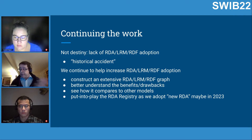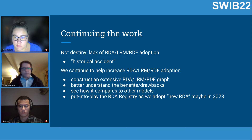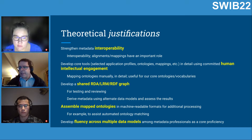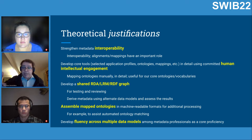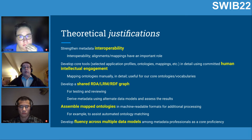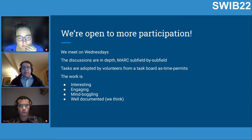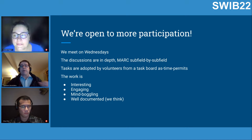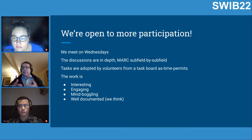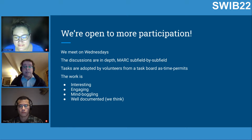Theory enters our work through our goal to increase RDA LRM RDF adoption. Main goals include creating an RDA graph to understand the drawbacks and benefits of RDA as linked data, comparing it to other models, and incorporating the RDA registry as we adopt the new RDA Toolkit in 2023. Theoretical justifications revolve around interoperability, human intellectual engagement, shared RDA graph building, assembling mapped ontologies, and developing fluency across data models. We meet every Wednesday and are open to more participation — tasks are adopted by volunteers from a task board.